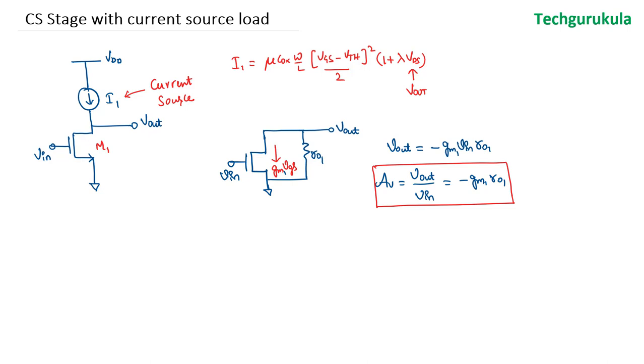Now, this result is very interesting because if we had a load resistor Rd, we would have a gain of minus Gm1 times R01 in parallel with Rd. Obviously, R01 in parallel with Rd, the resultant would be close to the smallest resistance out of R01 and Rd. We know usually that R01 will be really big value in mega ohms or so, depending on how much is the channel length modulation effect in the MOSFET.